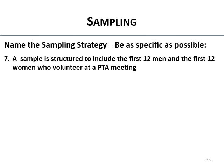A sample is structured to include the first 12 men and first 12 women who volunteer at a PTA meeting. They're trying to get exact numbers — that sounds like quota sampling.